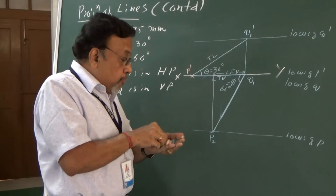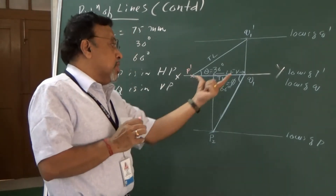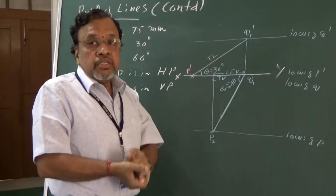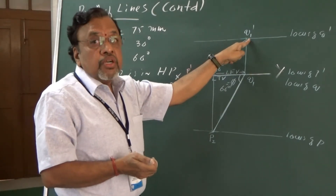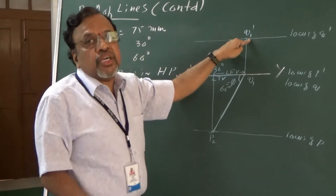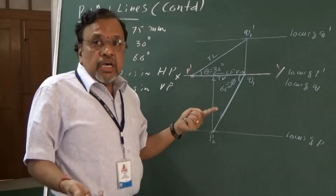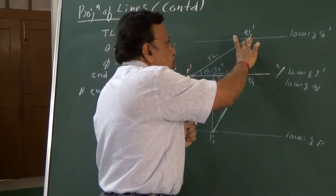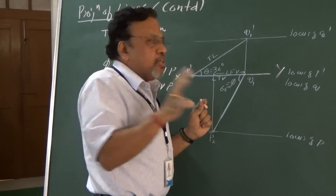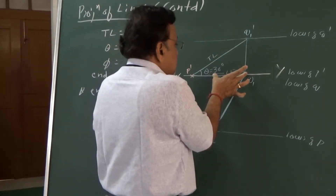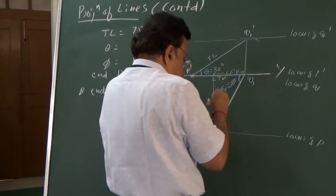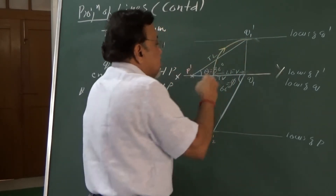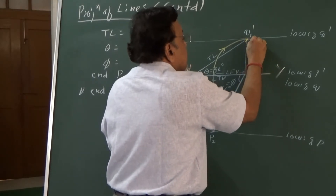Now I need to arrange using LFV. Remember, if the problem is done correctly, since the sum of the inclinations is 90 degrees — when I take the arc with P as center and LFV as radius — where do you expect this arc to cut? It should be tangential to this locus, not cut it at a separate point, because the sum of inclinations is 90. That is the only hint. Because of drawing errors, you may sometimes get slightly off — so don't unnecessarily scratch your head. Simply draw the arc up to that point to get the final Q dash.